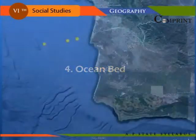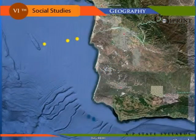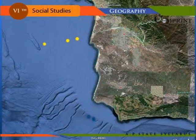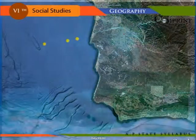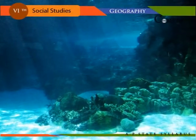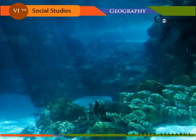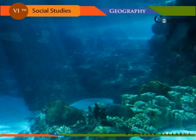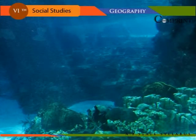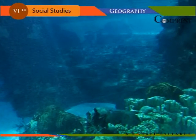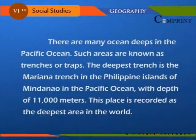Ocean Bed. The area from the sea coast up to a depth of 180 to 200 meters is called the continental shelf or edge. It continues as the continental slope with its depth ranging from 180–200 meters to 3,600 meters. The deep sea plain starts from there with an average depth ranging from 2,000–3,600 meters to 5,400–6,000 meters. The deepest part is the ocean deep or trench. There are many ocean deeps in the Pacific Ocean, and such areas are known as trenches or traps.